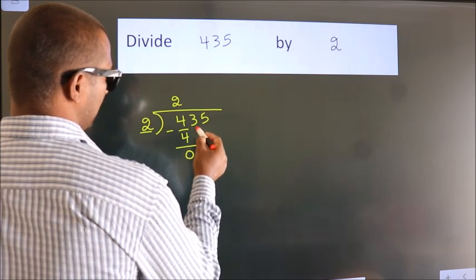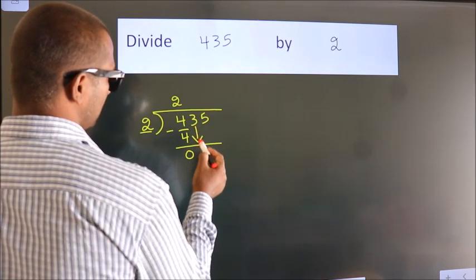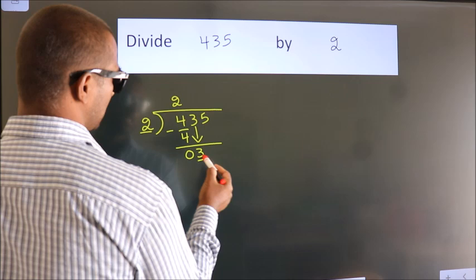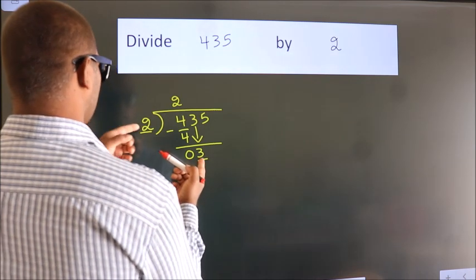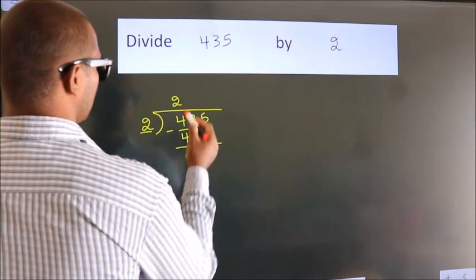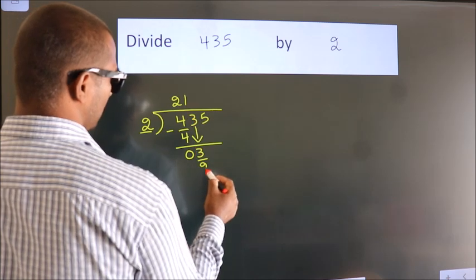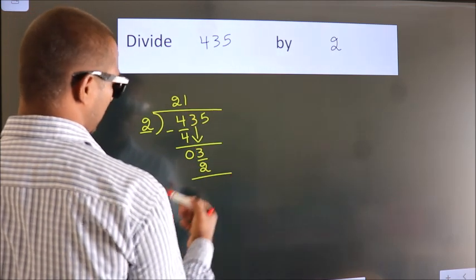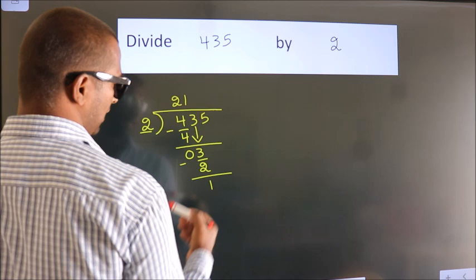After this, bring down the beside number. So 3 down. A number close to 3 in 2 table is 2 1s, 2. Now we subtract. We get 1.